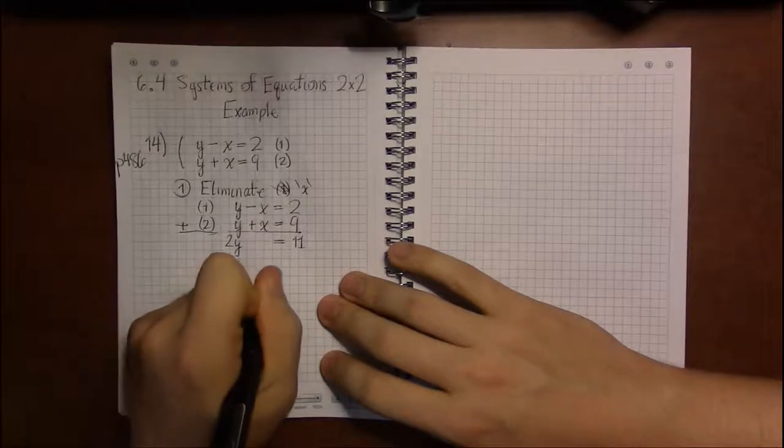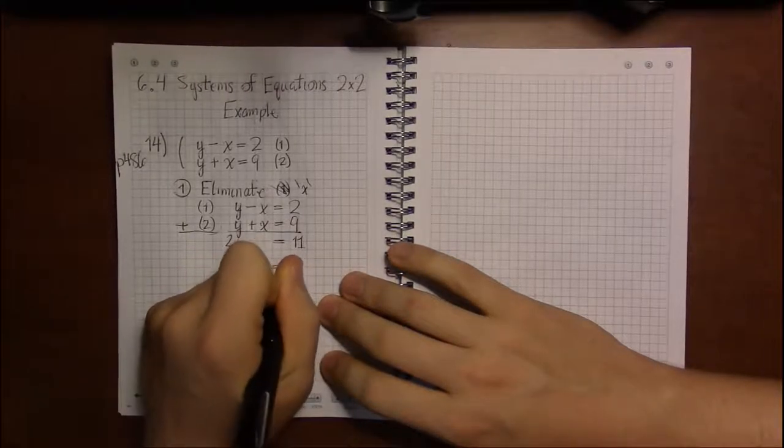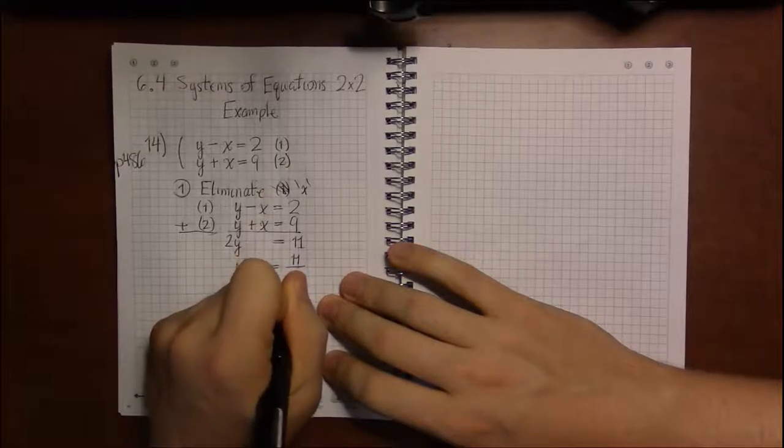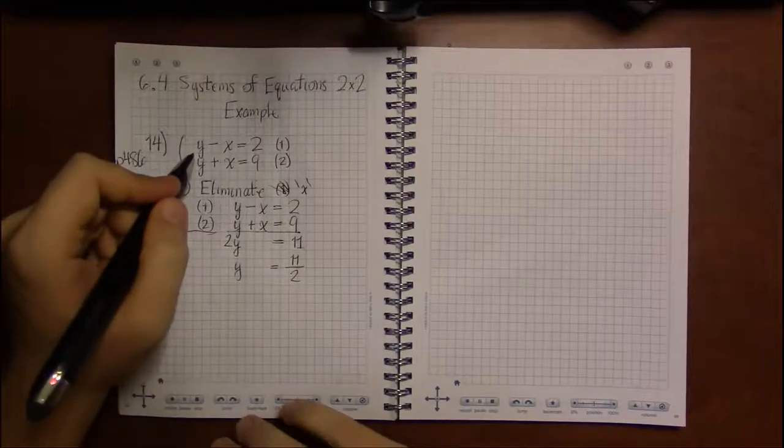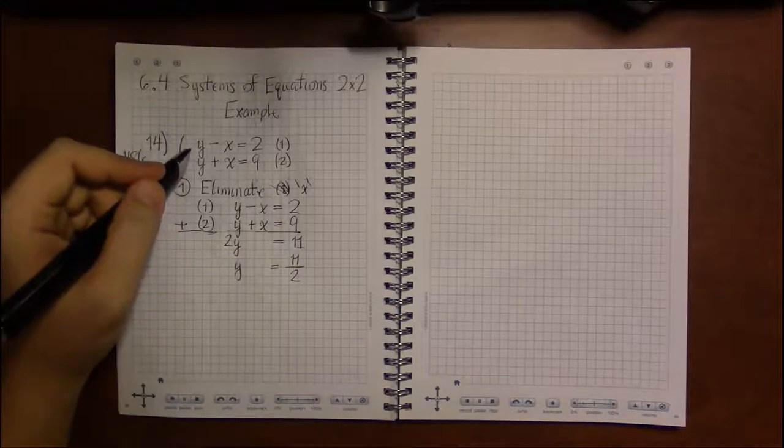So we see that y is equal to 11 over 2, or 5.5, 5 halves—excuse me, 5 and a half rather.